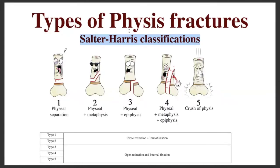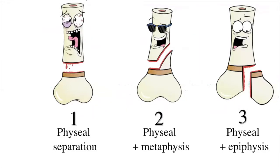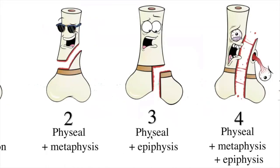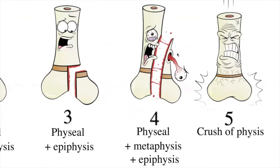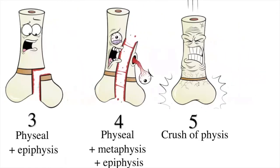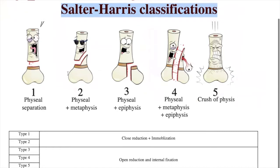It's really important to know the types of physeal fractures, which are classified using the Salter-Harris classification — five types. Type 1 is physeal separation only. Type 2 is physeal and metaphysis fracture. Type 3 is physeal and epiphysis fracture. Type 4 is physeal, metaphysis, and epiphysis fracture. Type 5 is a crush of the growth plate. Management depends on this classification: types 1 and 2 use closed reduction and immobilization; types 3, 4, and 5 require open reduction and internal fixation.